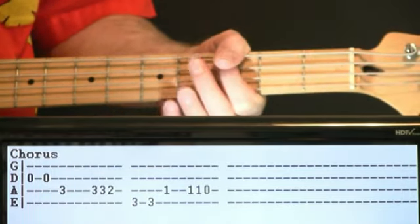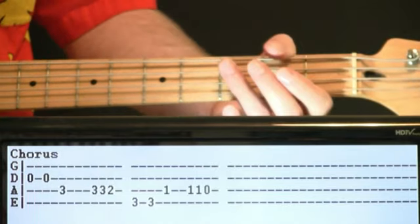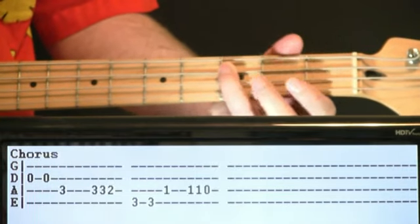We hit the three on the A for the C, hold it a moment, and then we'll go a couple threes on the A to two.